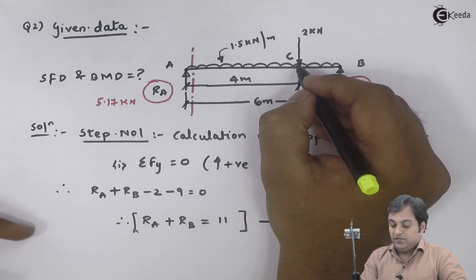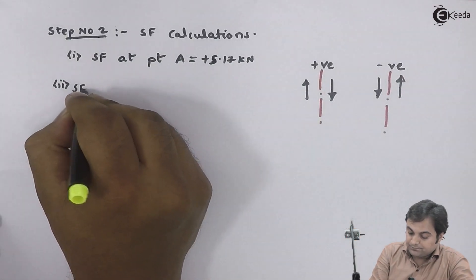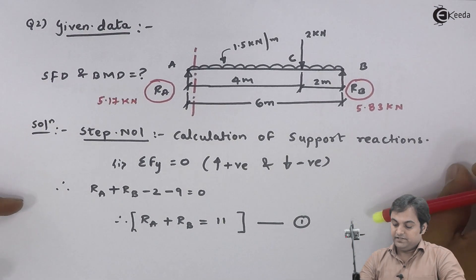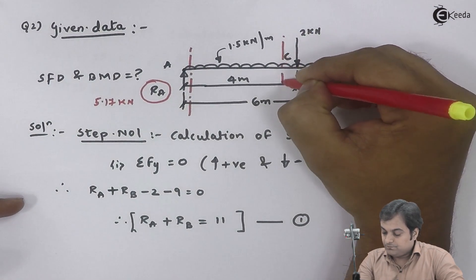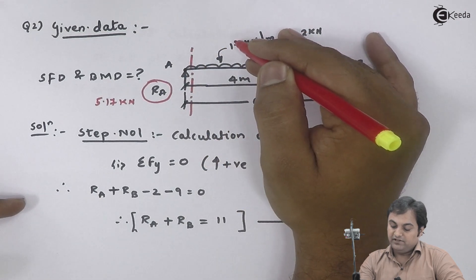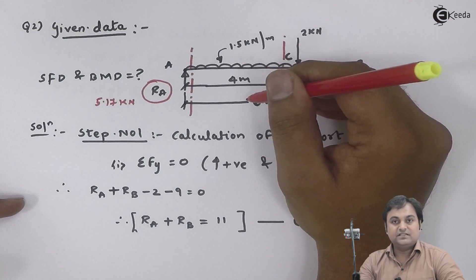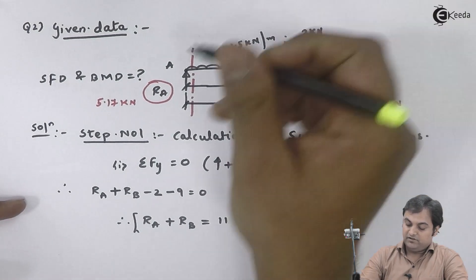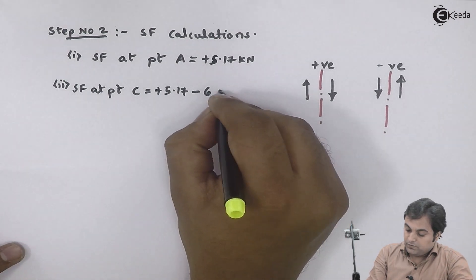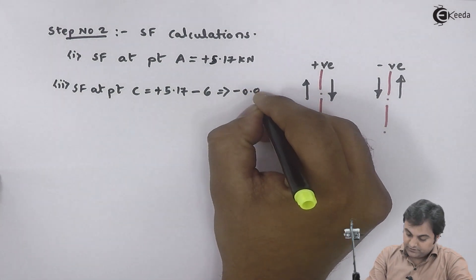Shear force at point C — first, taking the section just to the left of C. To the left I have RA upward (positive) and UDL of 1.5 × 4 = 6 kN (negative). So SF at C (left) = 5.17 − 6 = −0.83 kilonewton.